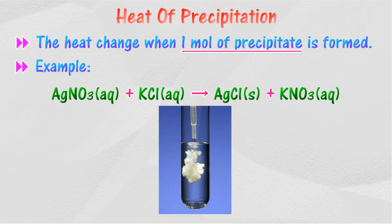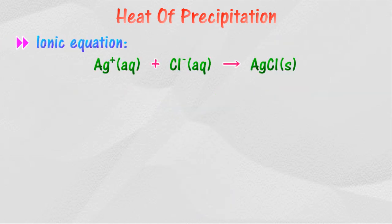For example, the reaction between silver nitrate solution and potassium chloride solution forms the white precipitate silver chloride. The actual reaction that occurs is the combination of one mole of silver ion with one mole of chloride ion to form one mole of silver chloride as shown in the following ionic equation.